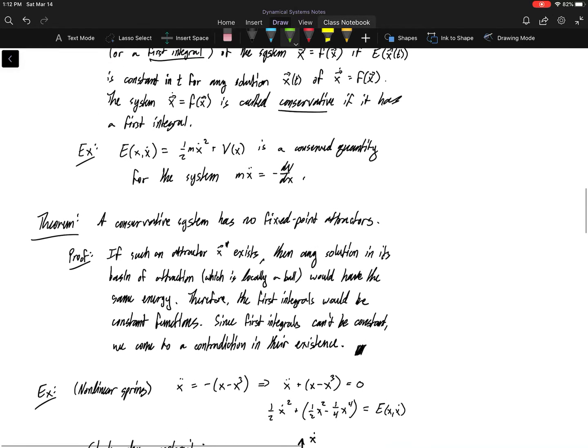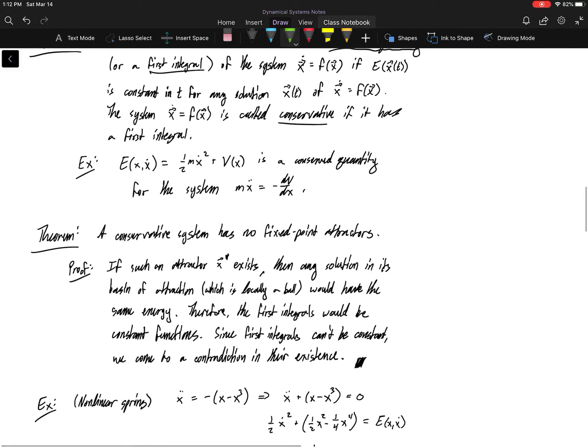And this energy has to be conserved or it has to be constant in time along any solution of the system x dot equals f of x. And when such a conserved quantity or a first integral exists for the system, we say that the system is conservative. And we've already shown that the generic Newton's equation, if I use one-half mv squared plus a potential as my energy function, that constitutes a first integral for that system. Therefore, this guy is a conservative system.